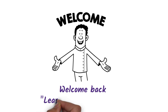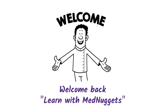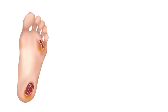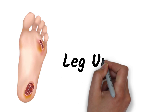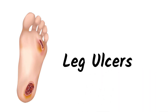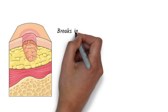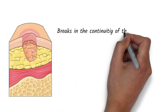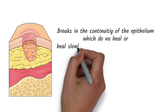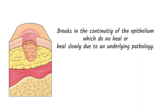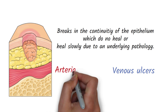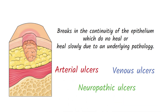Hello everyone, welcome back to Learn with Med Nuggets. In this video we are going to talk about how to differentiate between different types of leg ulcers. Leg ulcers are due to breaks in the continuity of the epithelium which do not heal or heal slowly due to an underlying pathology. There are three common types of leg ulcers: venous ulcers, arterial ulcers, and neuropathic ulcers.